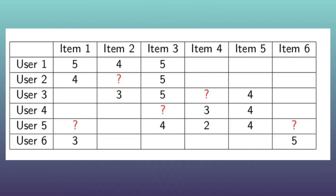So here you can see users that put some marks to some films, but not for all. Formally, the task of building a recommendation system comes down to the following: guess what marks the user will put at empty cells, and then you would be able to recommend highly rated positions to them. But it is easier to say than to do.